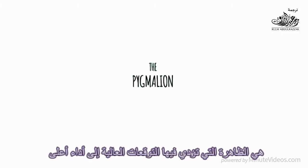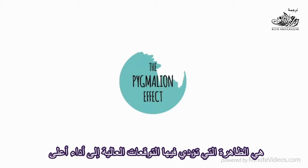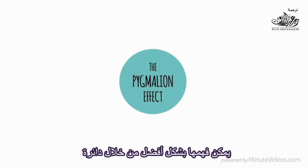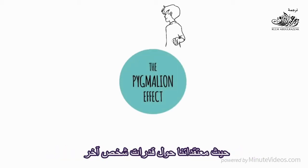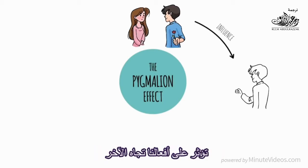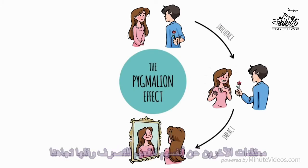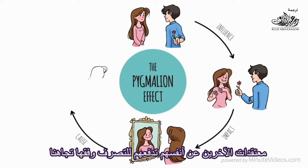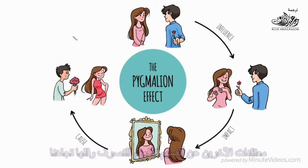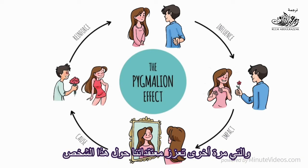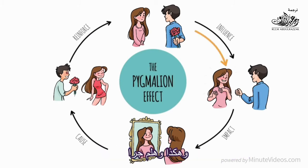The Pygmalion Effect is the phenomenon whereby higher expectations lead to higher performance. It can be best understood by a circle where our beliefs about another person's abilities influence our actions toward the other person. This action has an impact on the other's beliefs about themselves. The beliefs about themselves cause the other's actions toward us, which again reinforce our beliefs about that person, and so on and on.